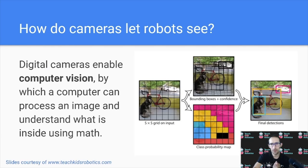But how do cameras actually let robots see? Digital cameras enable computer vision, by which a computer can process an image and understand what is inside using math.